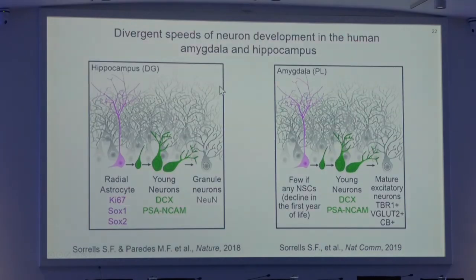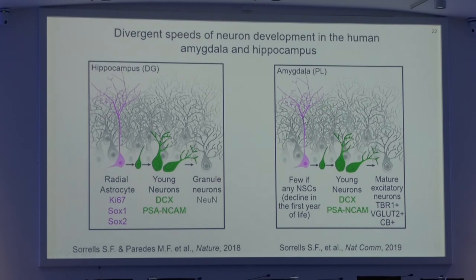In conclusion, our data suggests that in the human dentate gyrus we have neuronal development that seems restricted to fetal and early postnatal stages. Meanwhile, in the paralaminar nucleus of the amygdala, neurons also decline rapidly during the first year after birth, but we also have a population of immature neurons which persists longer and presents delayed maturation, suggesting that these two regions present diverging speeds of neuron development in the human brain.